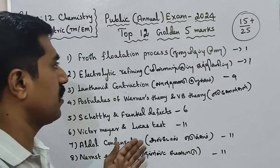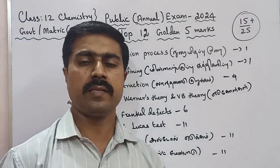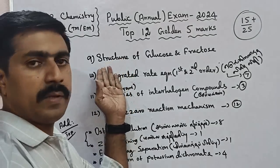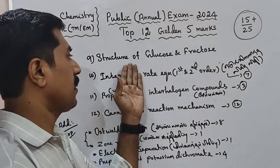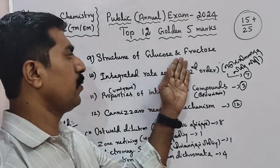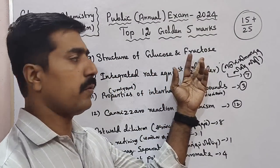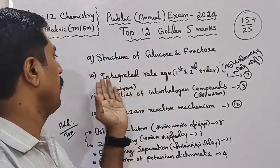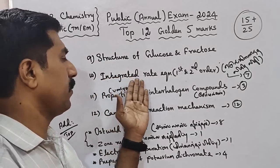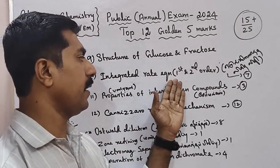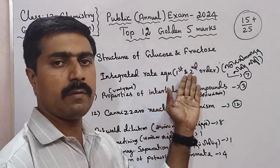That covers 8 questions. Next is the 9th question. Question 9: Structure of Glucose and Fructose — from Unit 15. Question 10: Integrated Rate Equation.